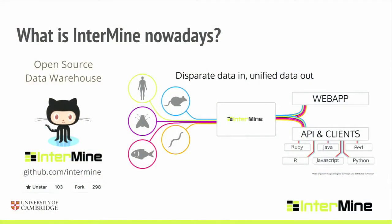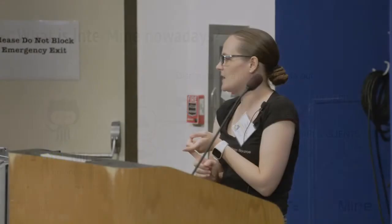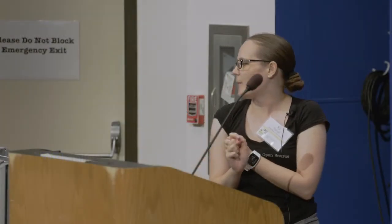I'm quite proud of this little graphic. It basically tries to visualize the fact that we take lots of different data sources that are separate and we merge them. Then you have the combined data flow on the other side where you can query it either using a web app, a GUI, or programmatically using our various API clients. And that fork number there — 298 — I feel like it could be a little bit rounder, so if anyone wants to pop onto GitHub and make it 300, feel free.